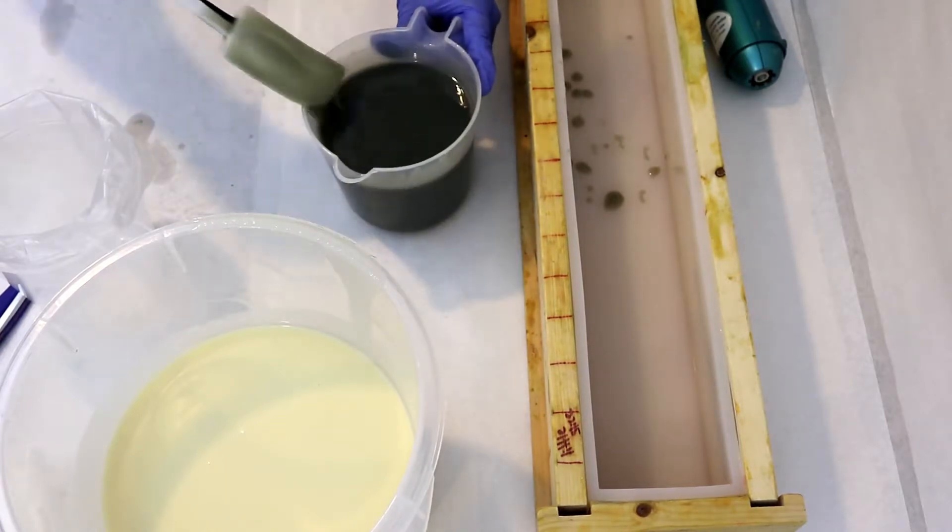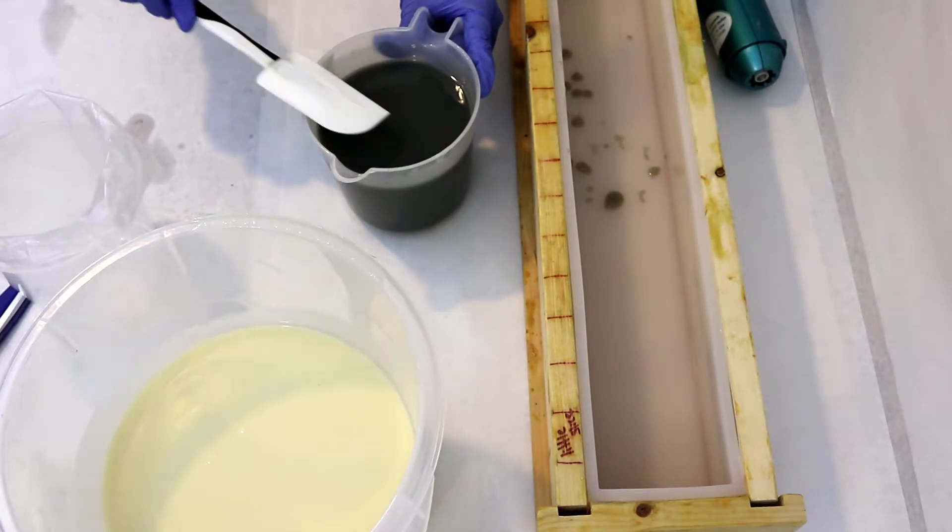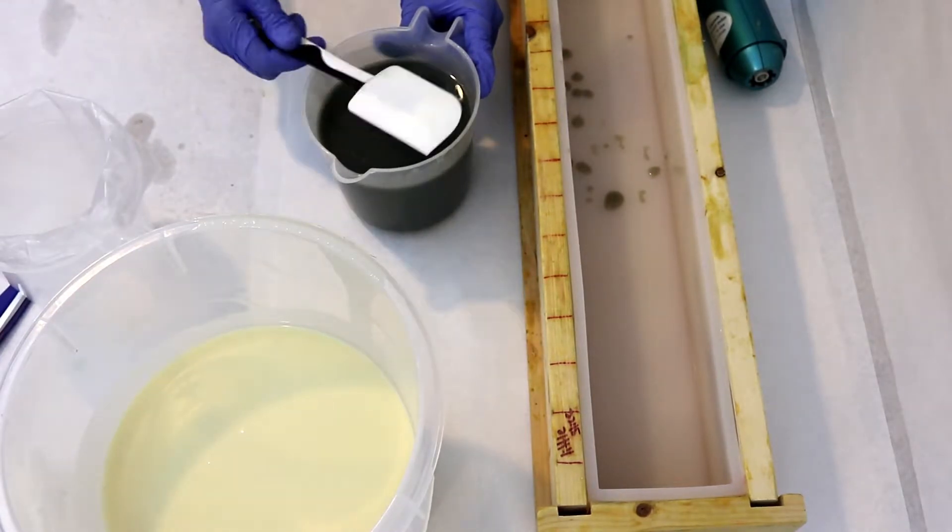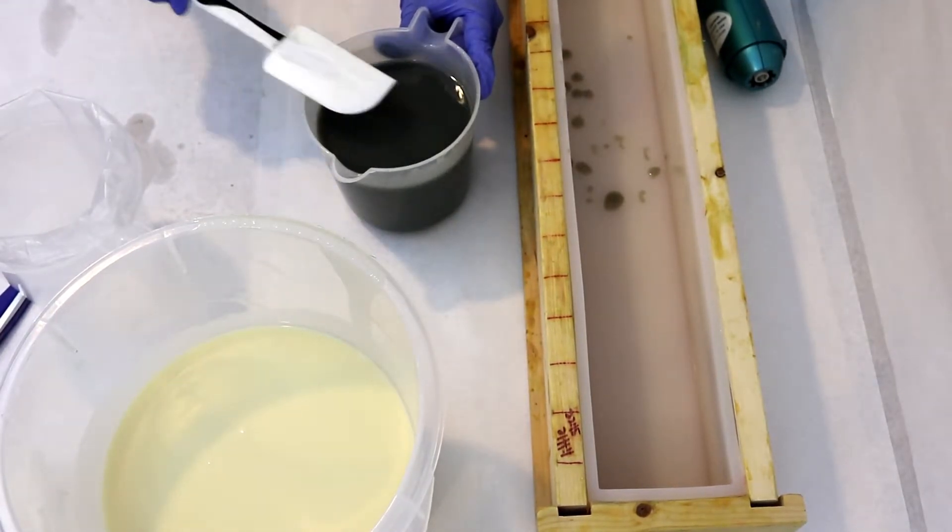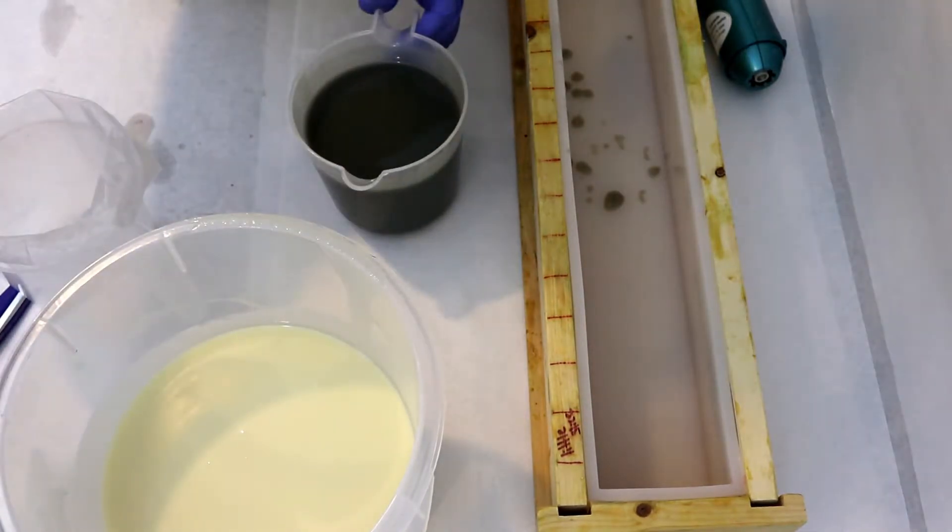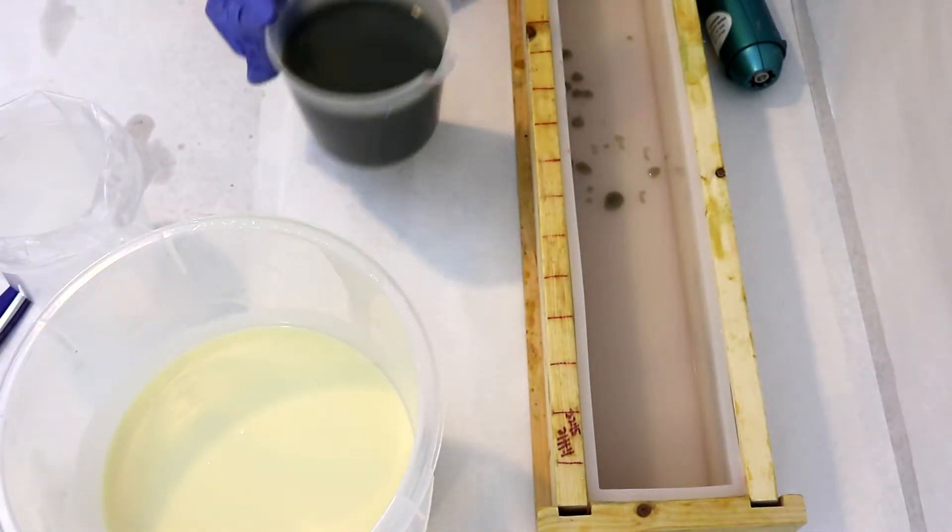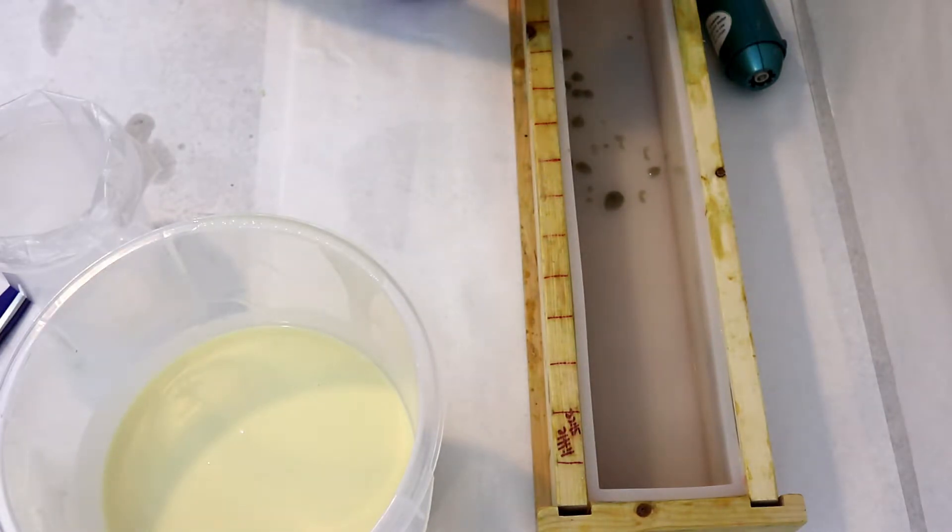So this design today is called a tiger stripe. Well that's what I call it. I think that's the official name for it. But it's where you pour the colors in, you do a dark color, a light color, dark color, light color, and it kind of makes a tiger stripe through your soap.